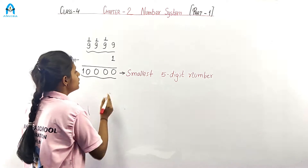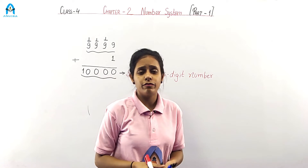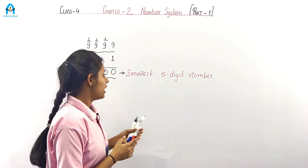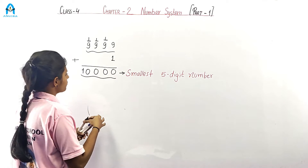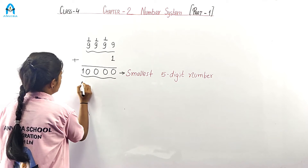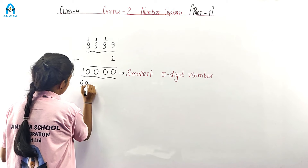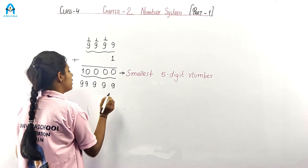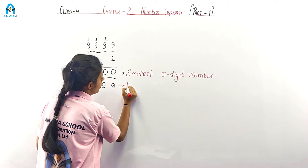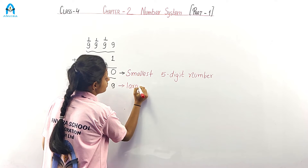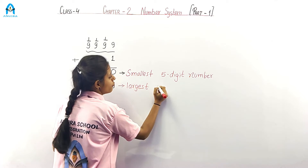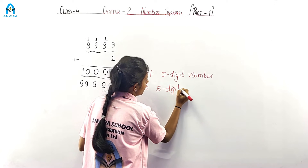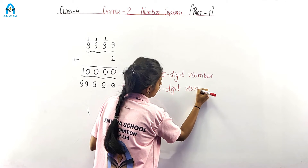This is the smallest 5-digit number. The largest 5-digit number is 99,999. This is the largest 5-digit number.